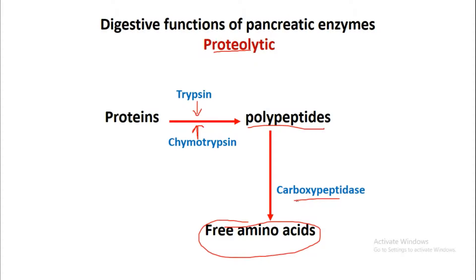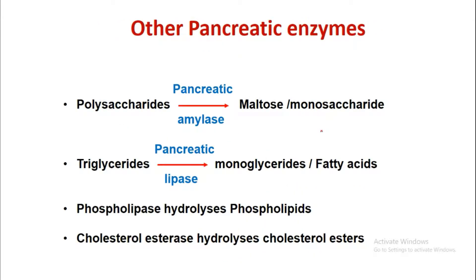Other pancreatic enzymes include: pancreatic amylase, which converts polysaccharides into maltose and monosaccharides; pancreatic lipase, which converts triglycerides into monoglycerides and fatty acids; phospholipase, which hydrolyzes phospholipids; and cholesterol esterase, which hydrolyzes cholesterol esters. So trypsin, chymotrypsin, carboxypeptidase, pancreatic amylase, and pancreatic lipase are the most important enzymes working on protein, carbohydrate, and fat respectively.